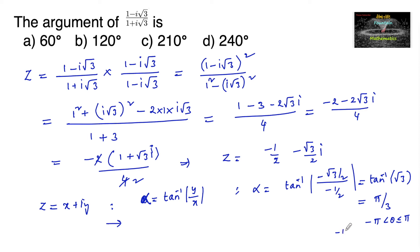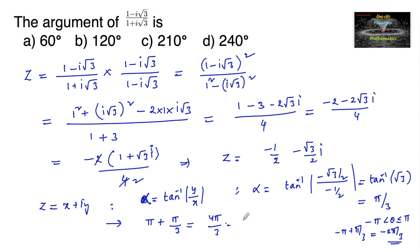For the principal argument, we compute -π + π/3 = (-3π + π)/3 = -2π/3. For the general argument in the third quadrant, we compute π + π/3 = 4π/3, which equals 240 degrees. So the argument of the complex number z is 240 degrees, which corresponds to the fourth option.